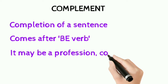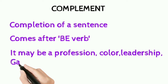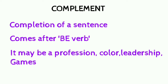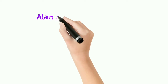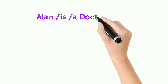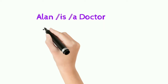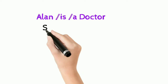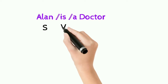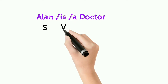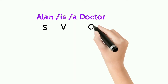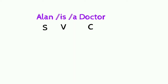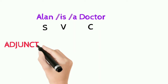Complement may indicate a profession, color, leadership, or role. Let's learn with an example: 'Alan is a doctor.' Alan is the doer of the action, so Alan is subject. 'Is' is a be-form verb, so that is the verb. 'Doctor' comes after the be-form verb, so that is the complement — and it is also a profession.